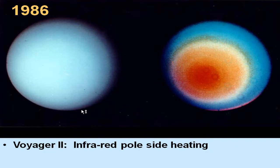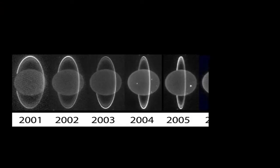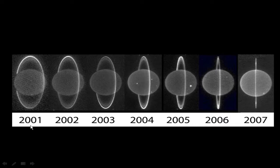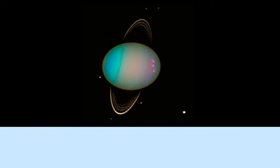Here's how Uranus looked in 1986 from Voyager 2. Incidentally, Uranus emits as much heat as it gets from the Sun, so there's no internal heat source — it's the only Jovian that does that. From 2001 to 2007, we see Uranus getting more and more edge-on, and a more recent picture shows much more clarity of distinction of bands and storms on the surface, with very colorful bands and the ring system visible.